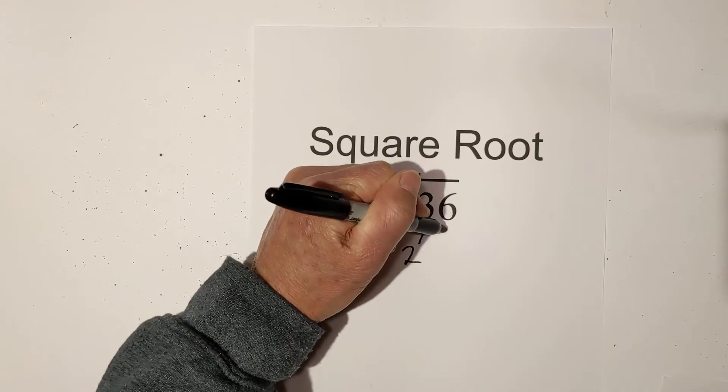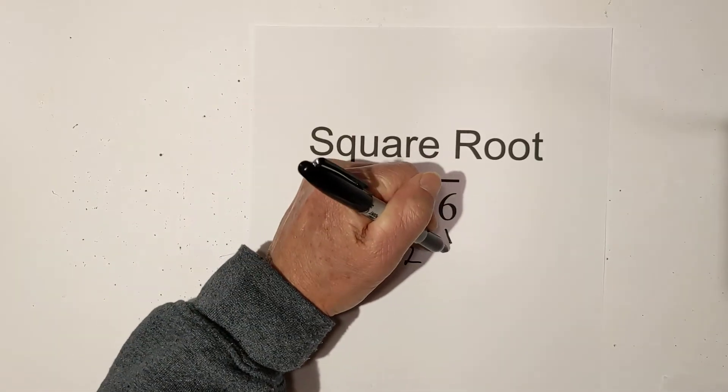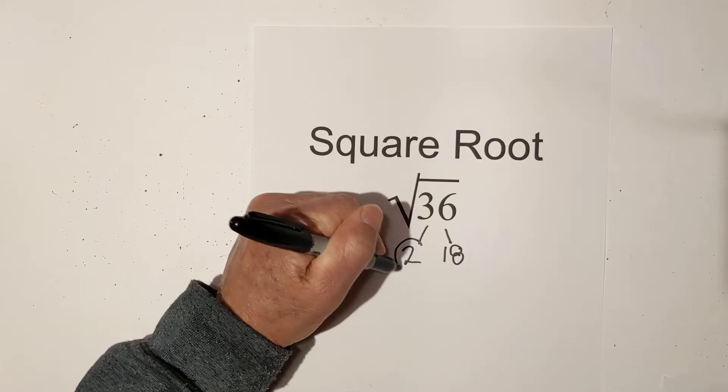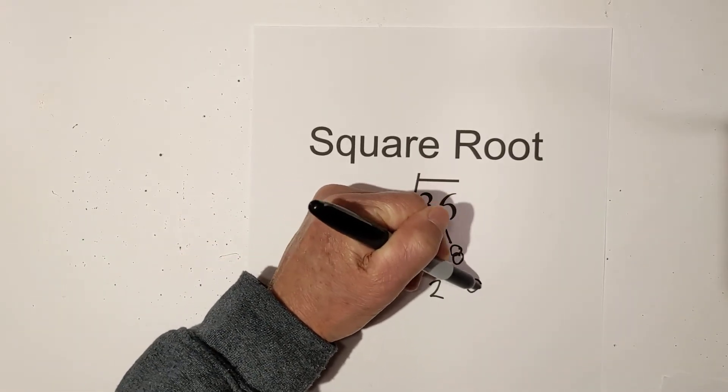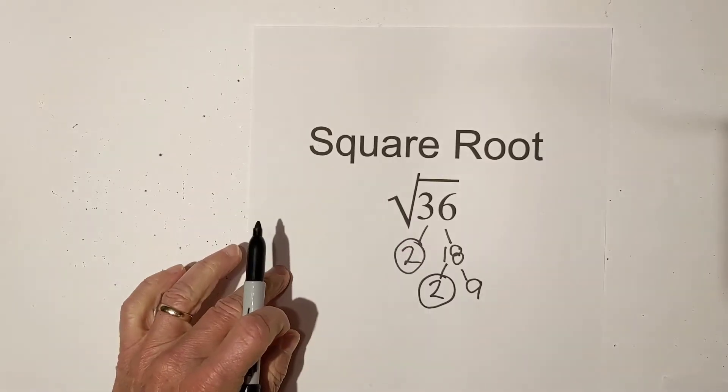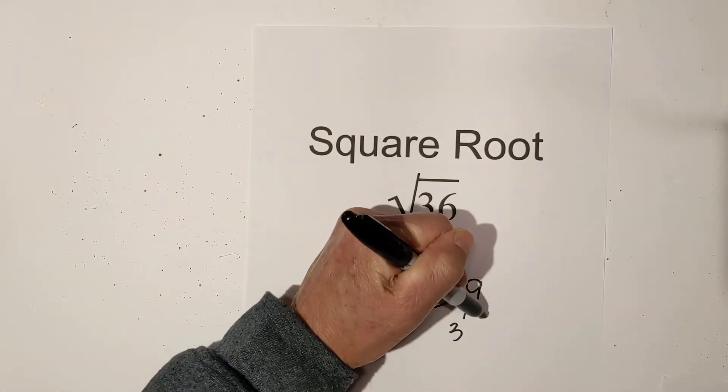Let's start: two times 18. Circle the two because it's prime, and then two times nine. Circle the two because that's prime, and then three times three.